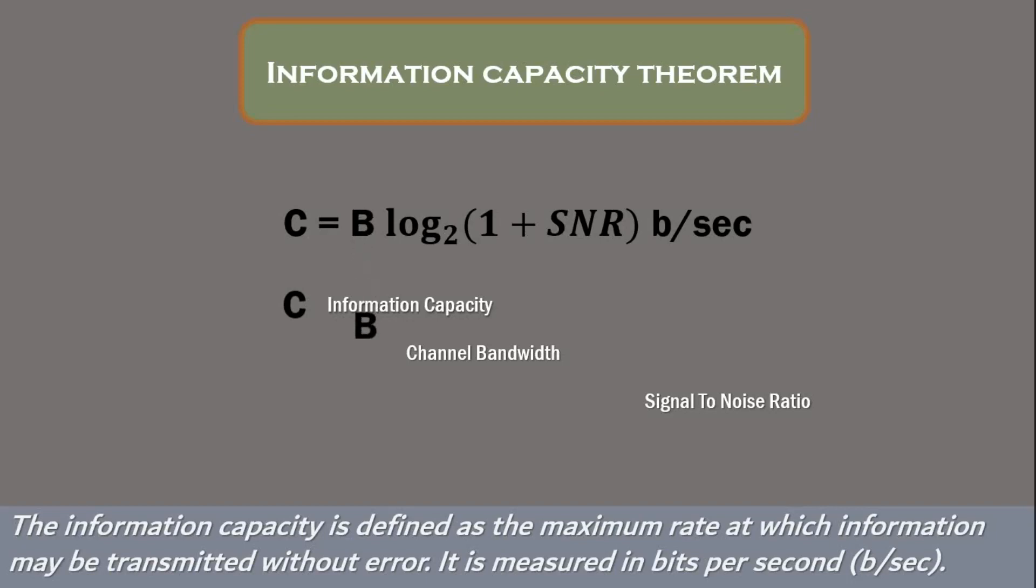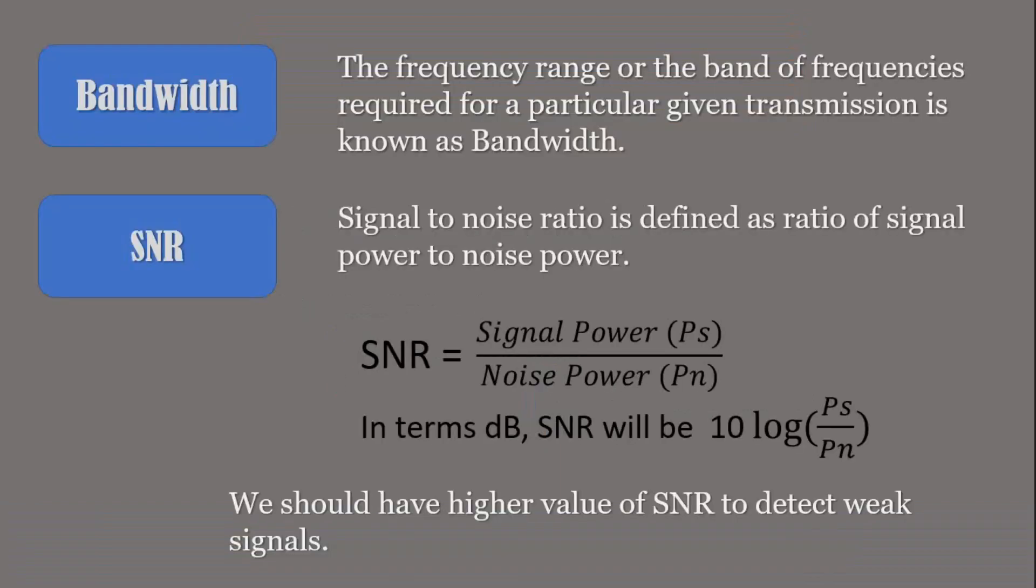B is channel bandwidth and SNR stands for signal to noise. The above equation clearly shows that for a prescribed information capacity, we may reduce the required signal-to-noise ratio by increasing the channel bandwidth. Hence, the advantage of using broad bandwidth to transmit messages is established here.